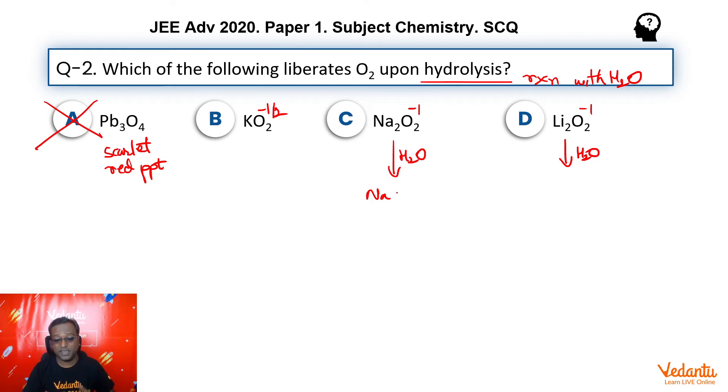Sodium comes from a strong base that is NaOH. So, it basically exists as cation anion and O2 2 minus comes from a weak acid, relatively weaker acid H2O2. So, it gets converted into its acid anionic hydrolysis.